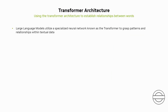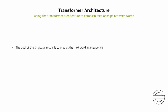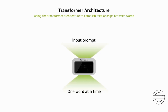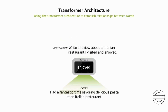Large language models utilize a specialized neural network known as the transformer to grasp patterns and relationships within textual data. They undergo pre-training on extensive text datasets and can be fine-tuned for specific tasks. The goal of the language model is, given the preceding words in a context, to predict the next word. While this example pertains to the English language, the prediction could also apply to a computer programming language or another language. The model generates text one word at a time, based on an input prompt provided by the user — for example, 'Write a review about an Italian restaurant I visited and enjoyed.' The input prompt is broken down into smaller tokens that are fed into the model, which then predicts the next word in the sequence until the user stops providing input or the model reaches a pre-determined stopping point.